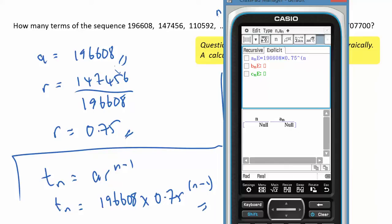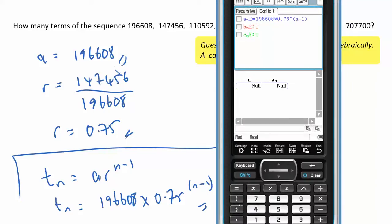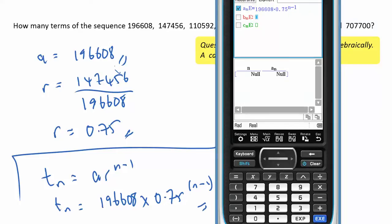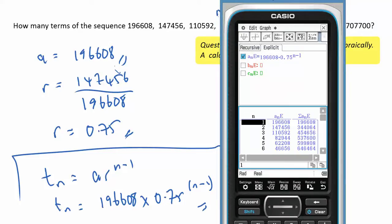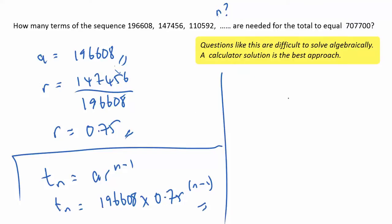We'll use the N button here, selecting the column button. I've already had that set up, so it produces the sum or the series as we go, and we want 707700. You can see the eighth term will give us the sum of 707700. So eight terms are required.